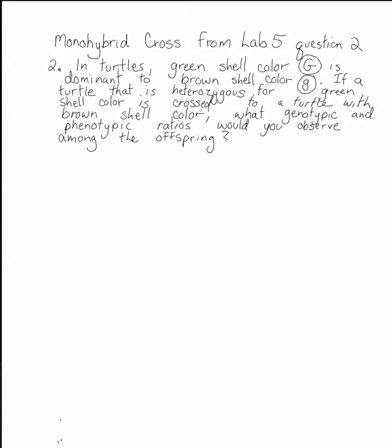Now we're going to do the monohybrid cross from Lab 5, question 2. In this problem, we're looking at turtle shell color. We have the gene for shell color and it has two alleles.